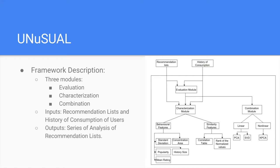UNUSUAL can be illustrated as a framework as shown in the picture. As inputs, the framework requires the recommendation list, the history of consumption, and any other information required by the unexpectedness metrics we want to evaluate. The framework has three main modules: the evaluation, characterization, and combination modules. The unexpectedness metrics are first executed given the recommendation list and history of consumption, and then the computed unexpectedness scores are used as inputs in the characterization and combination modules. As outputs, the framework provides a series of statistical analyses and visualizations about the unexpectedness scores and recommendation lists.